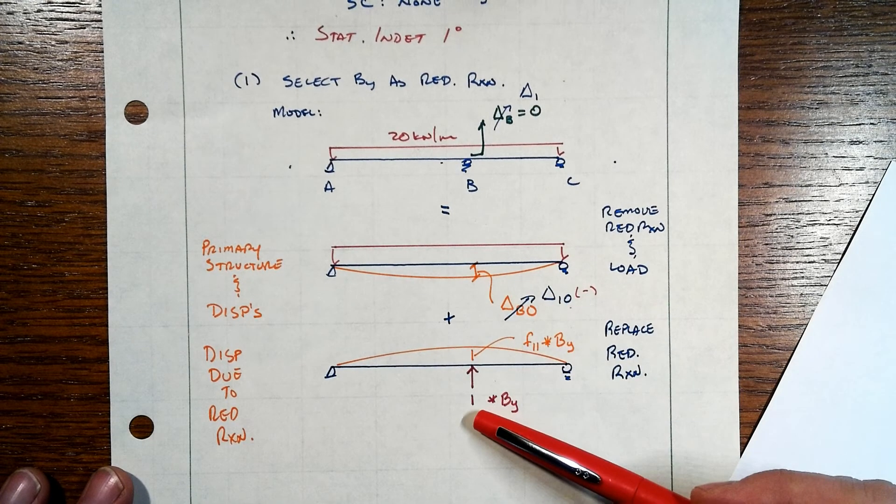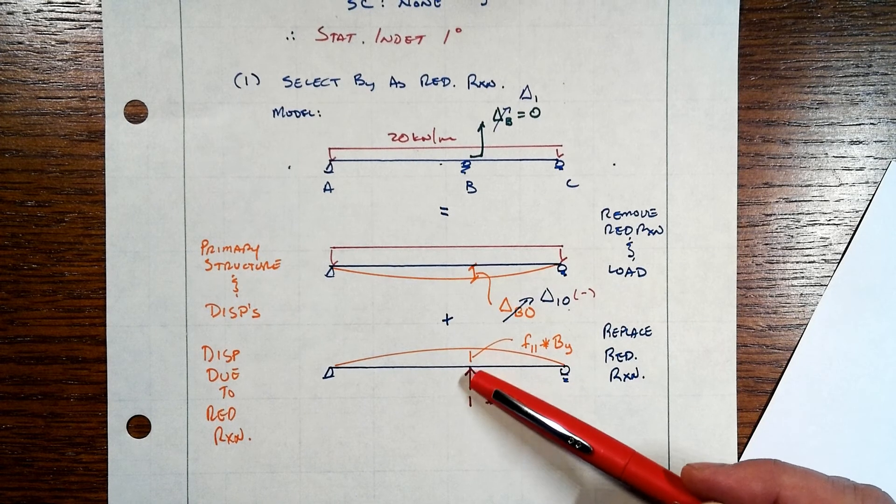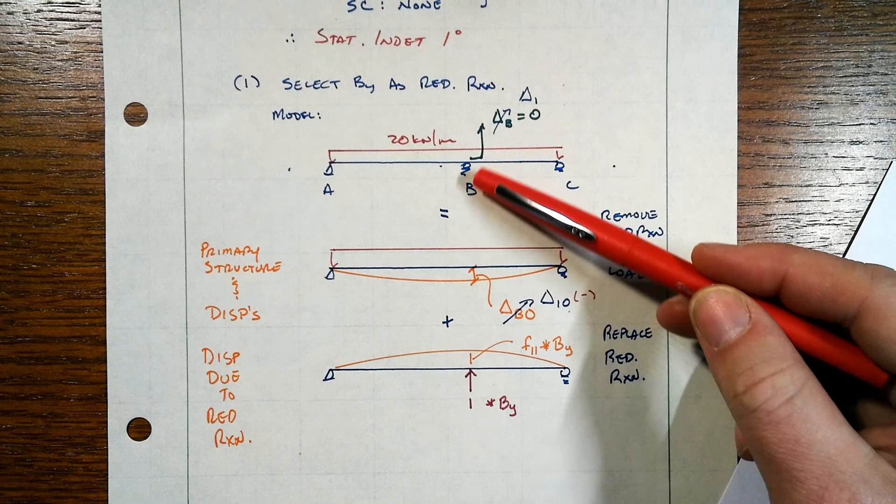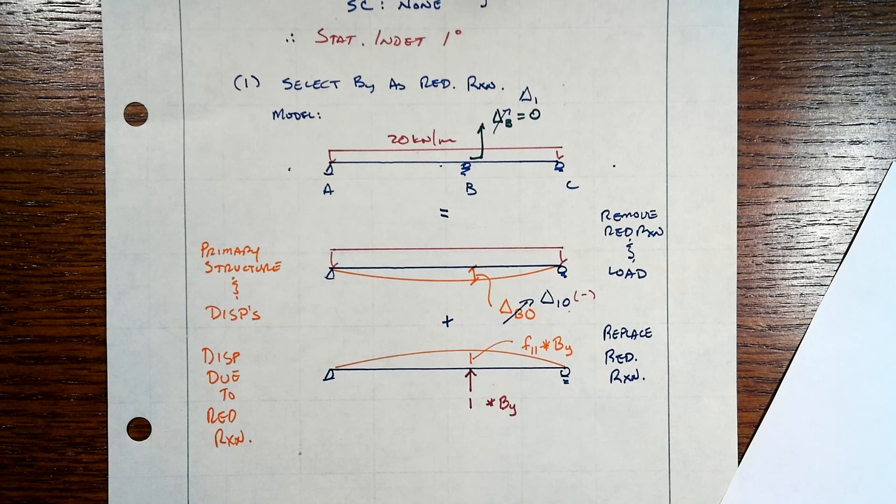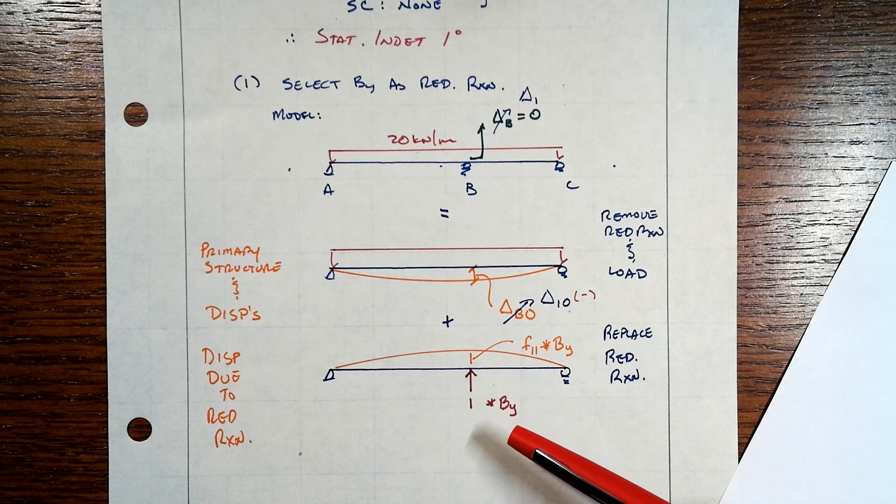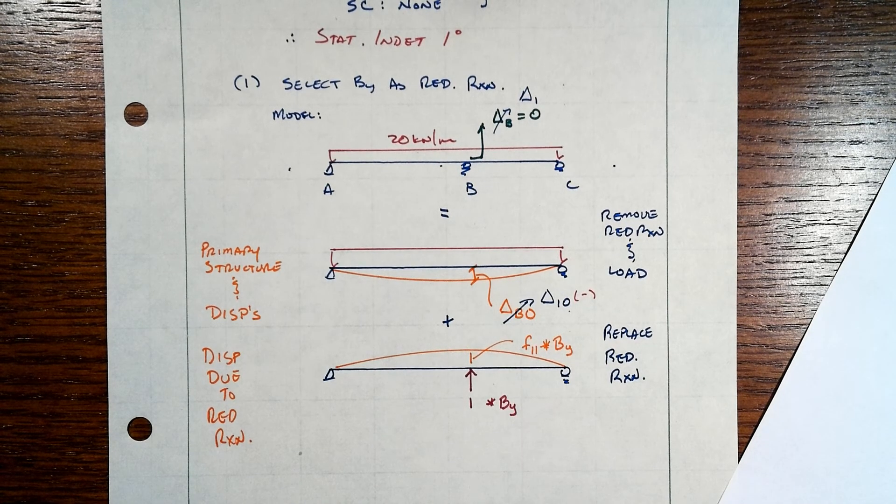And then we're going to put that reaction back into it, and we're going to end up adding the displacements in each of those systems, that's the compatibility equation, where the unknown reaction is going to be our unknown, and that's what we're going to actually solve for. Right? And that's what we'll execute in the next steps.